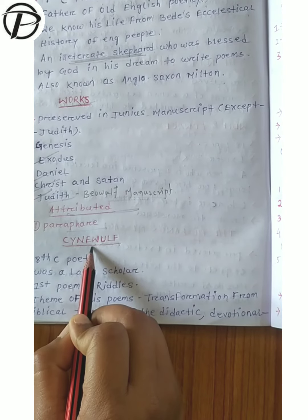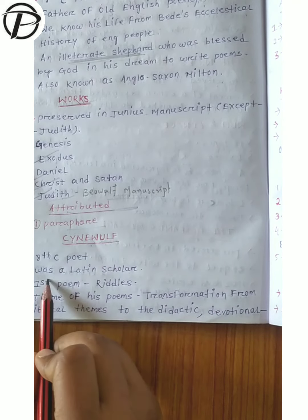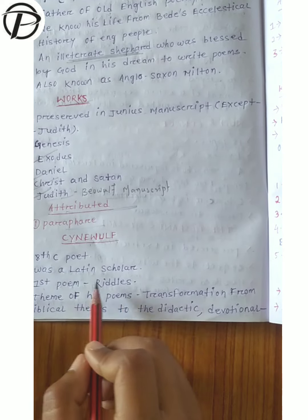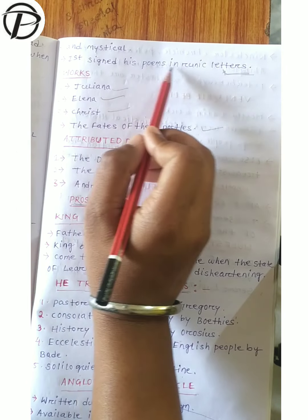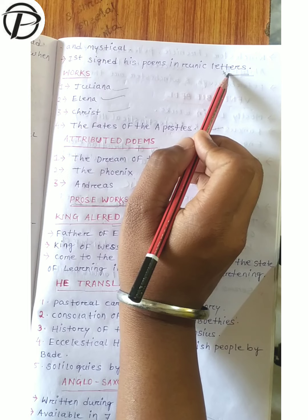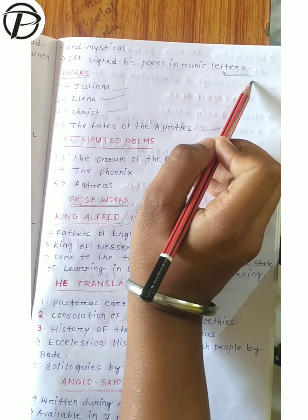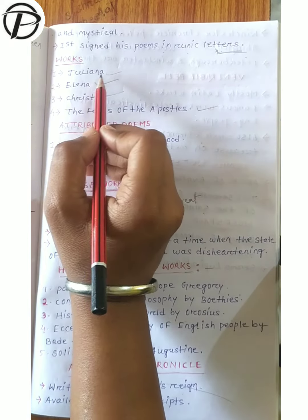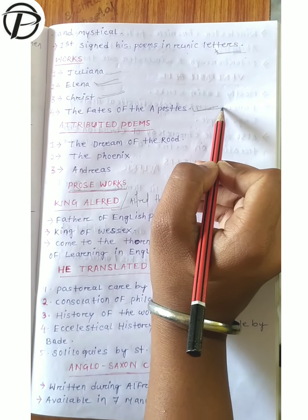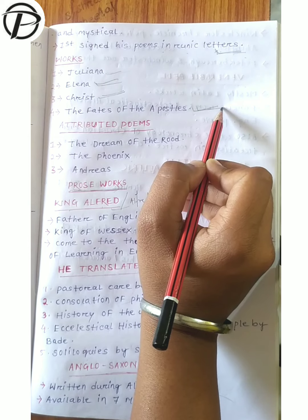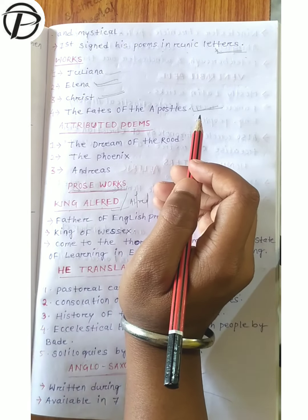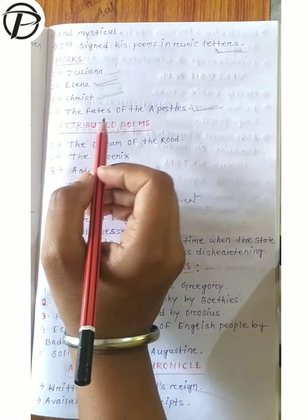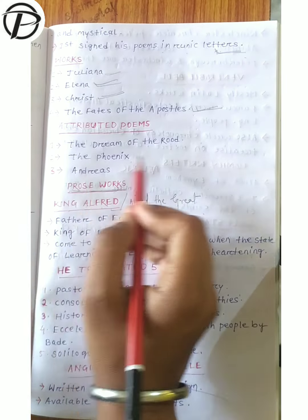The next important poet is Cynewulf, an 8th-century poet and Latin scholar. His first poem is Riddles. The theme of his poems is transformation from biblical themes to the didactic, devotional, and mystical. He was the first to sign his poems in runic letters - important to remember, as earlier there was anonymity of writing, but Cynewulf was the only one who signed his works. His works are Juliana, Elene, Christ, and The Fates of the Apostles. Attributed poems include The Dream of the Rood, The Phoenix, and Andreas.